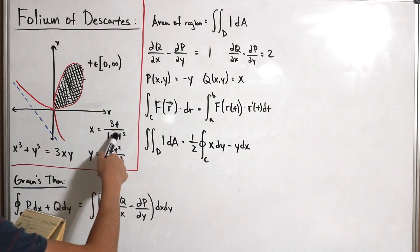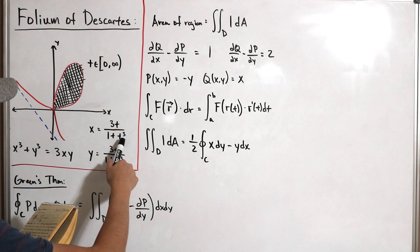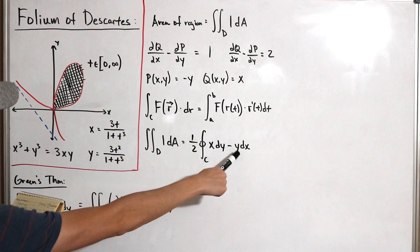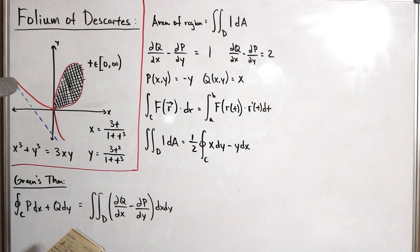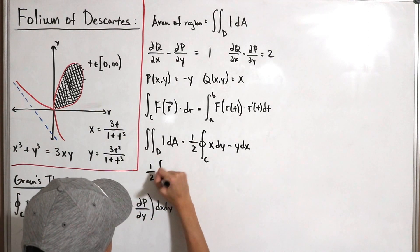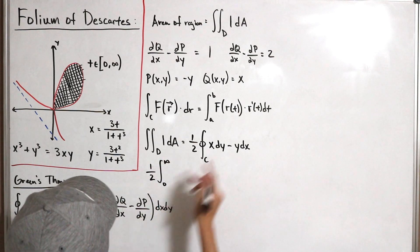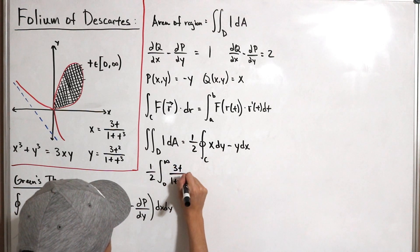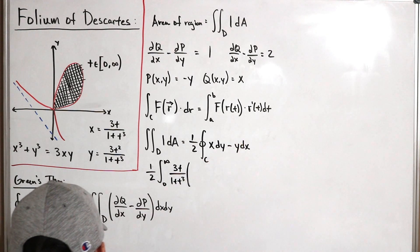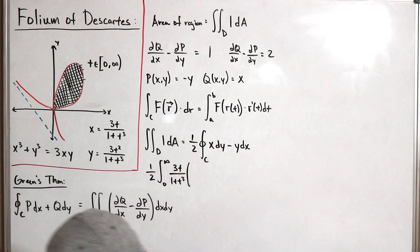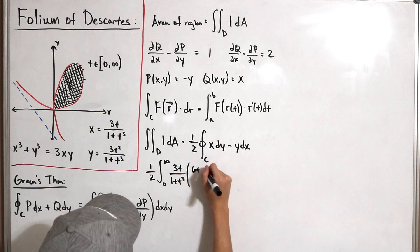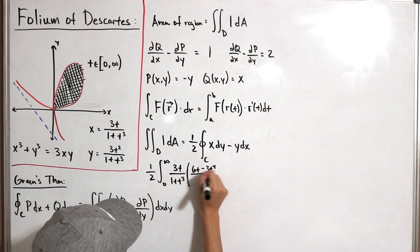Now we substitute the parametric equations. We set x = 3t / (1 + t³) and compute dy from the parameterization of y. Since we're converting to a parameter t, the new interval is 0 to infinity. So we have (1/2) times the integral from 0 to infinity of (3t / (1 + t³)) times the derivative of y with respect to t.